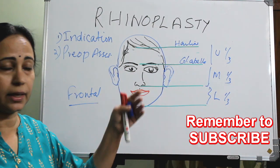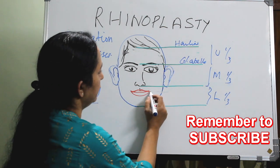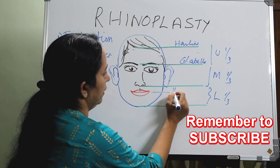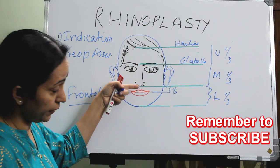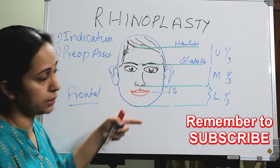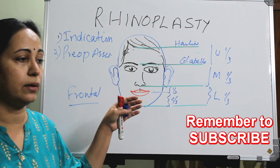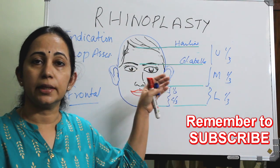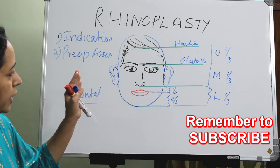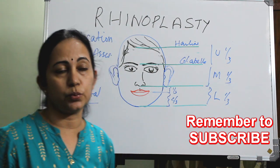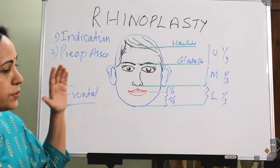The lower one-third is again divided into the philtrum and upper lip combined — that is the shorter one — and the lower lip and chin combined. So the frontal face is divided into three equal thirds: one-third, one-third, and one-third. There are also vertical lines that divide the face into five equal divisions.